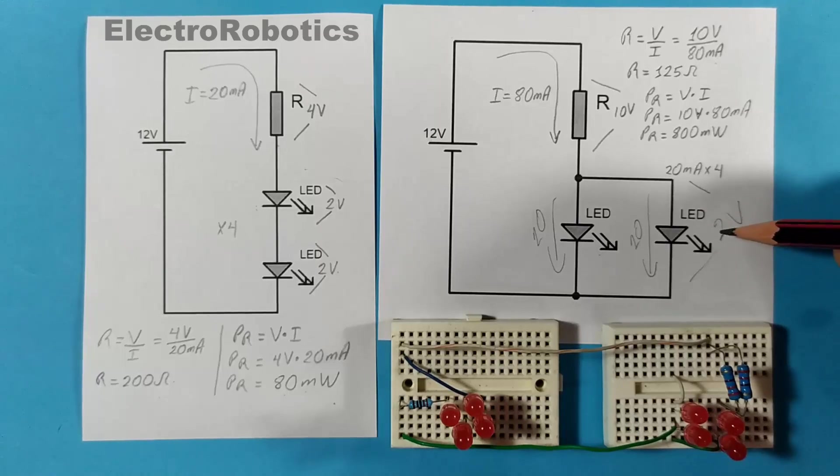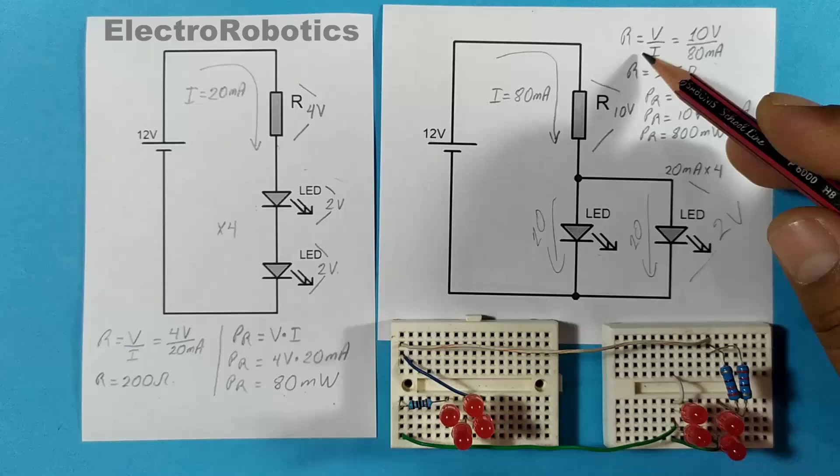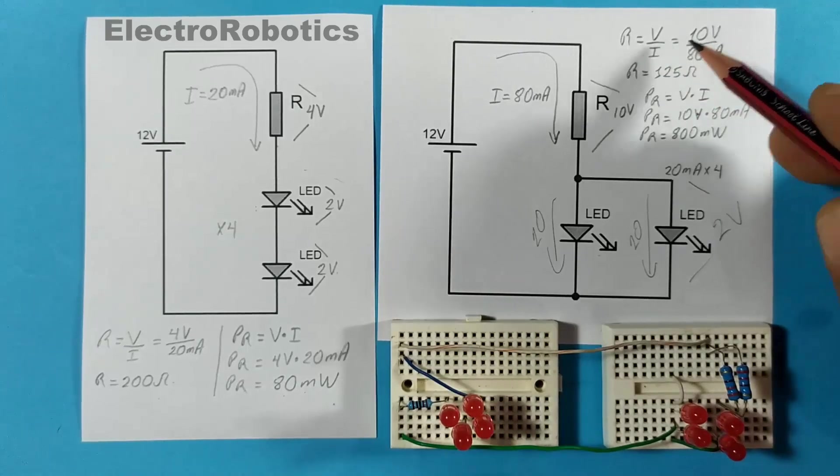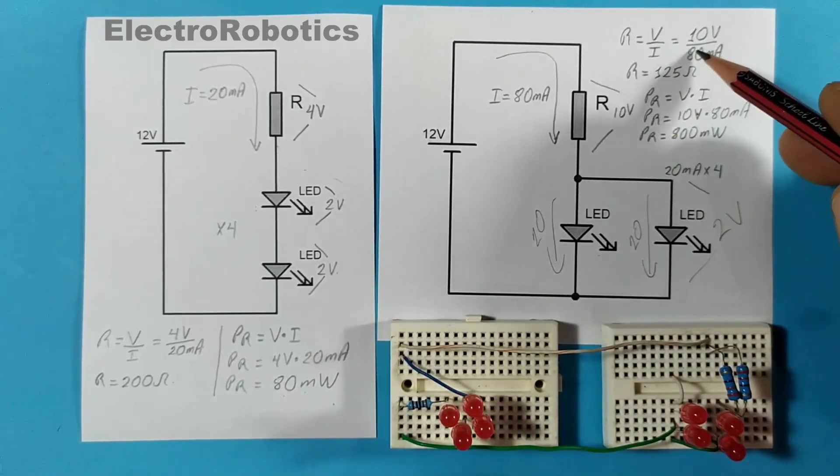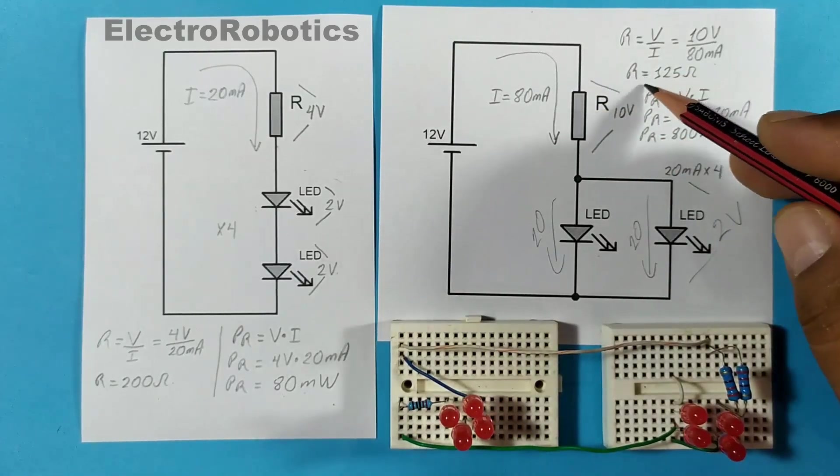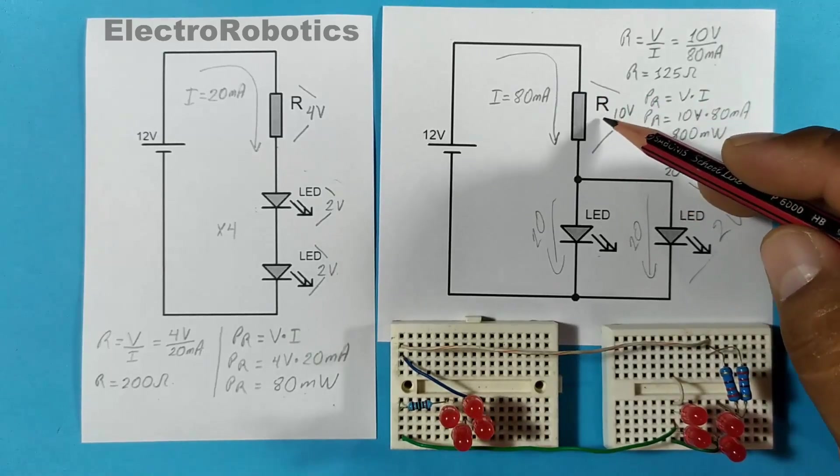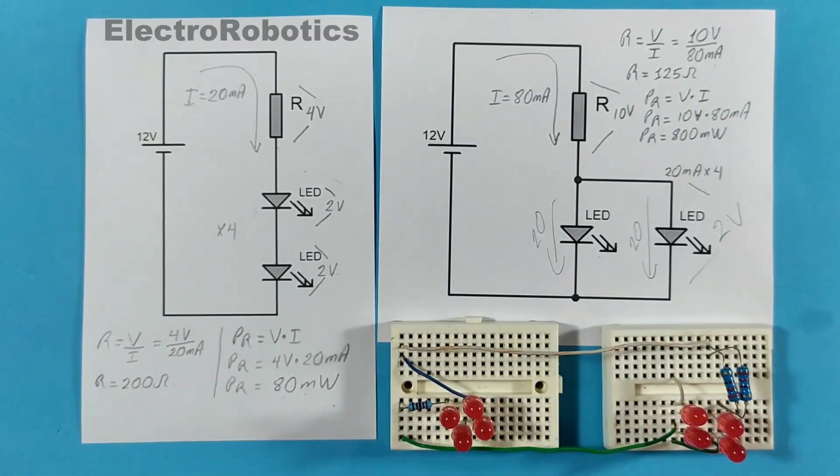Well, taking into account that they are all the same color means that the resistance value will have to be equal to the 10 volts that fall on it and the 80 milliamps that will pass through it. Then we would have a 125 ohm resistor, installed here to supply the 80 milliamps in this case.